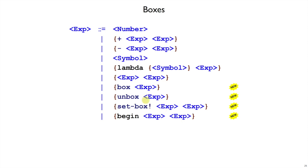That means we're going to add box, unbox, and setBox as new forms in the curly language. I'm also going to throw in a begin form, which is like plate's begin form. So the plate begin form evaluates the first expression, and then evaluates the second expression.